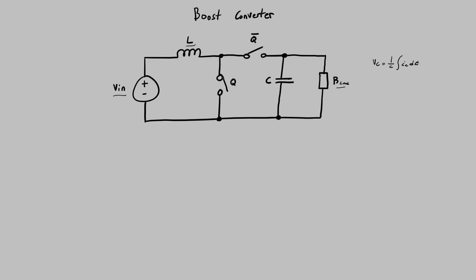When the circuit first starts, this bottom switch closes, which charges up the magnetic field through this inductor. Then, to get the voltage increase effect the boost converter is known for across the load resistor, this bottom switch opens up after a certain time, and you end up with the top switch closing, which is usually a diode. Since the inductor wants to keep maintaining the current flow through it, it's going to push current through that top switch into the capacitor and then into the load resistor. Then the bottom switch closes again and the top switch opens, so it kind of repeats itself.